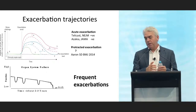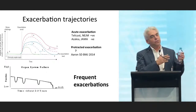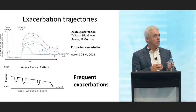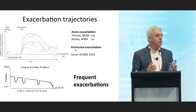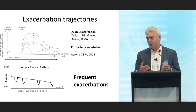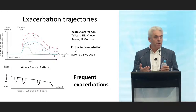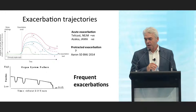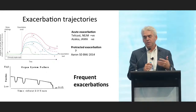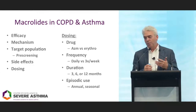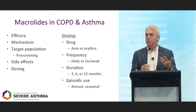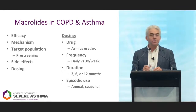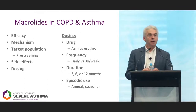The real benefit is around frequency of exacerbations over several years. So I'm going to look at the use of macrolides — long-term low-dose use. The key issues are: do they work? How do they work? Is there a group who responds better? And what are the side effects?